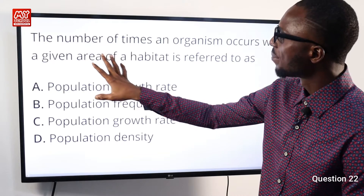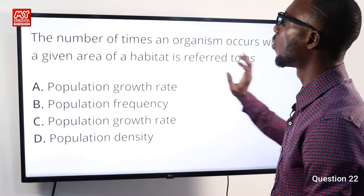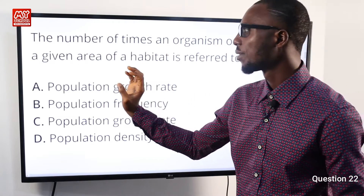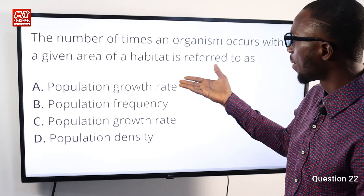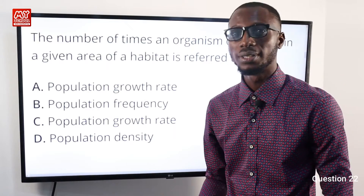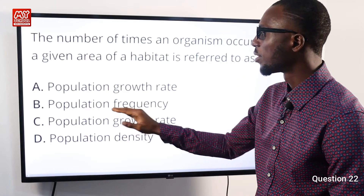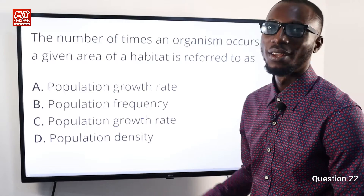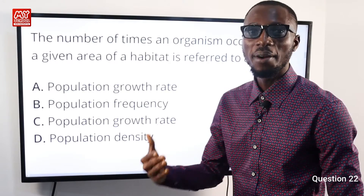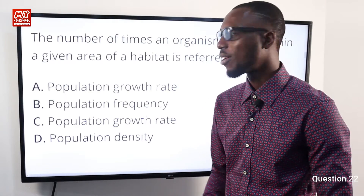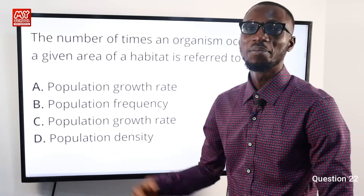Question 22: The number of times an organism occurs within a given area of a habitat is referred to as population frequency, because frequency talks about the number of times of occurrence. So option B is very correct.